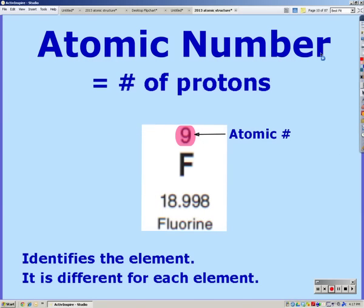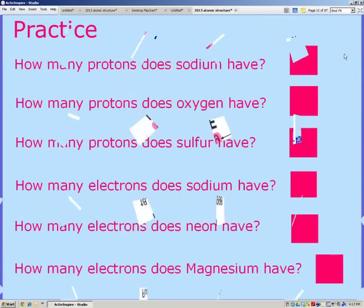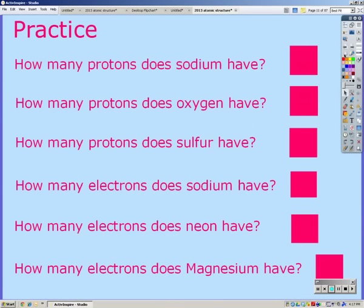So the atomic number is the number of protons. It's going to identify the element because protons never change. And so each element has a different number of protons. It's going to be located on the top, usually.